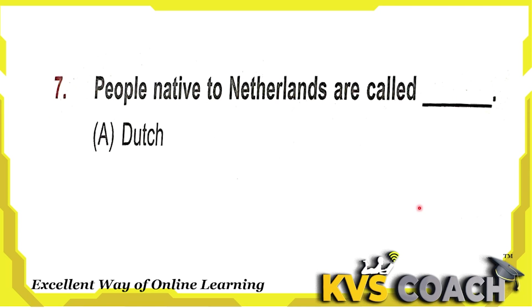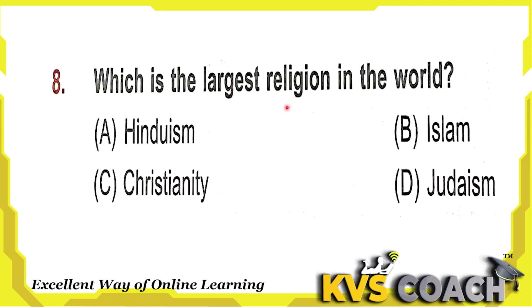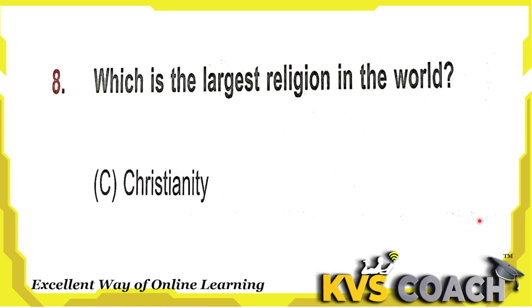Next question: which is the largest religion in the world? Option A is Hinduism. Option B is Islam. Option C is Christianity. Option D is Judaism. So the right answer is option C: Christianity is the largest religion in the world.